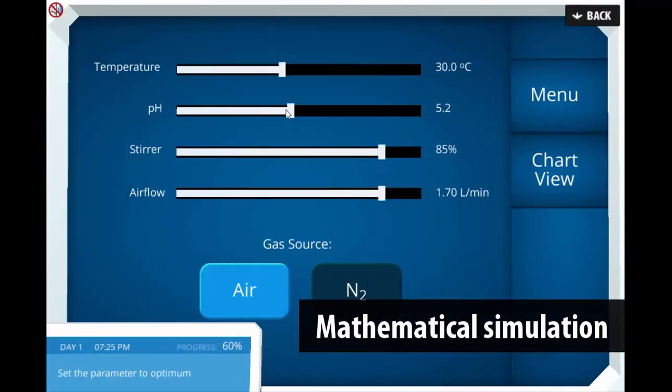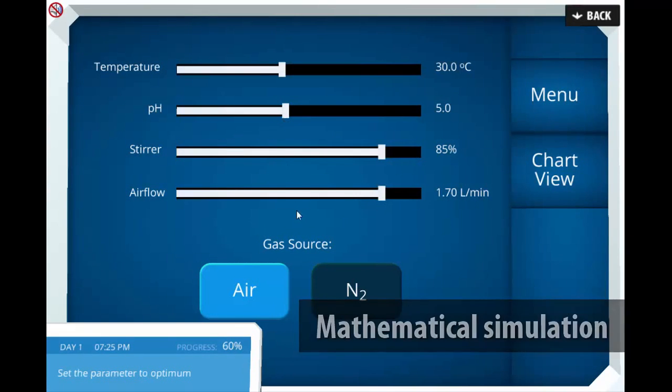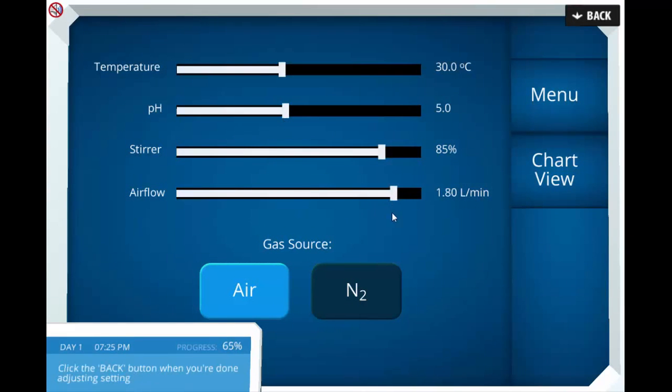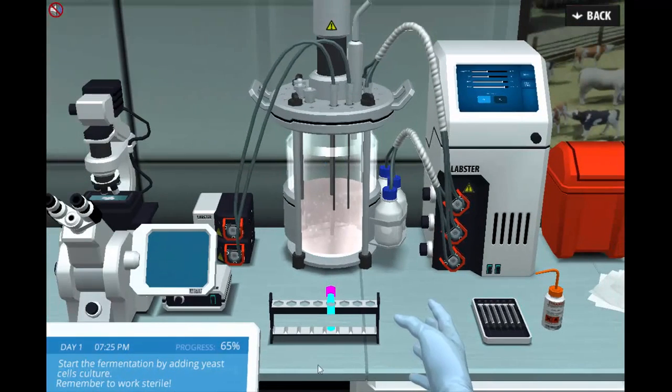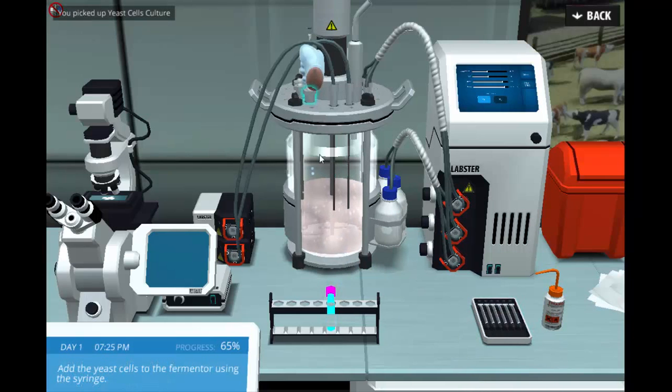Using mathematical simulation, students can change various fermentation parameters. This includes temperature, pH, stirring power, and selection between air and nitrogen.